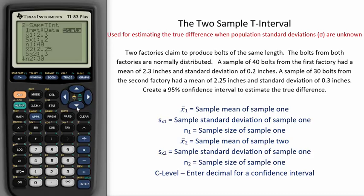The sample mean from factory two is 2.25. The sample standard deviation from factory two is 0.3. The sample size from factory two is 30.